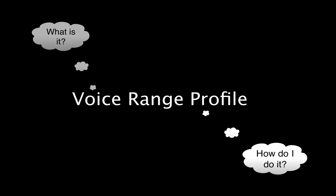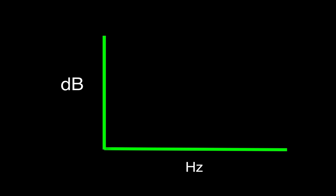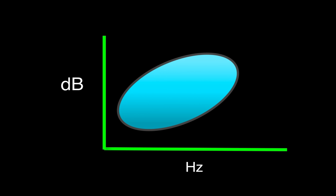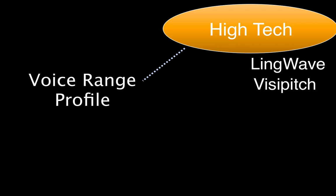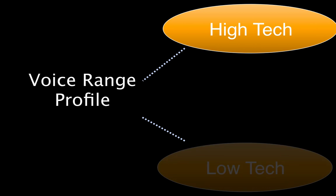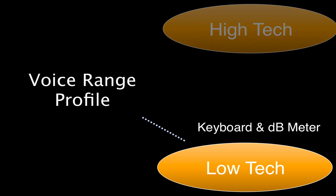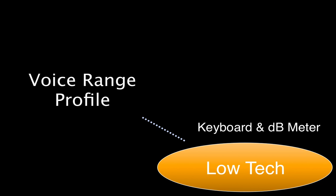Voice Range Profile: what is it, and how do we do it? The Voice Range Profile plots the dynamic range in decibels as a function of the fundamental frequency range. This represents the extreme possibilities of the voice. While these extremes may not be essential for all voice patients, it is an important measurement when considering professional voice users, particularly singers. While there are computerized versions that automate the Voice Range Profile, such as Ling Waves or the K-Pentax Voice Range Profile, there is also a way to do it using common low-technology instruments, such as a dB meter and a keyboard or frequency tone generator.